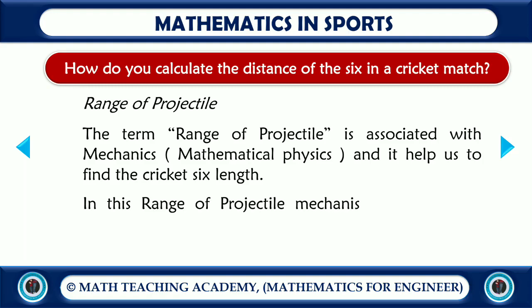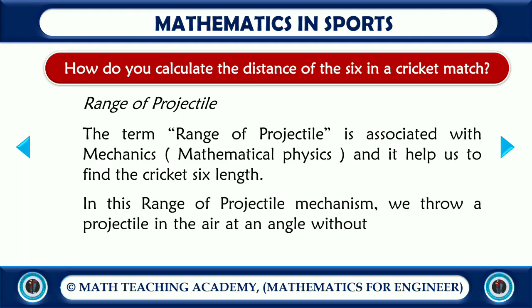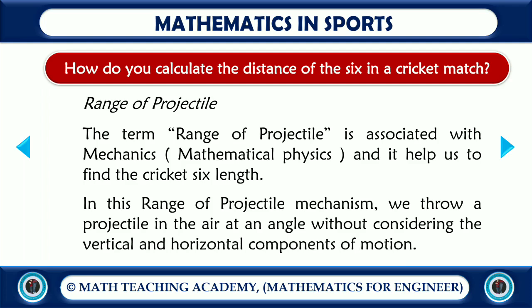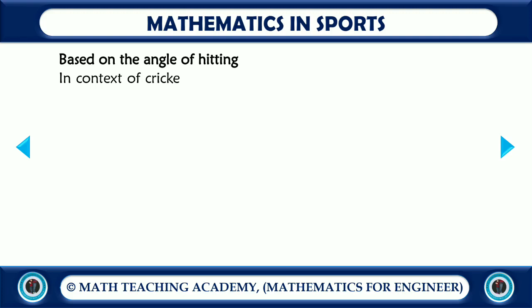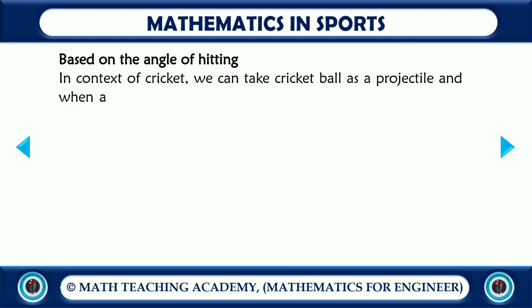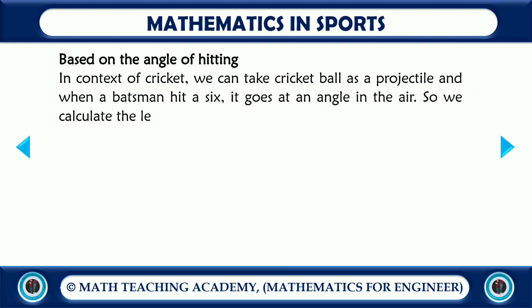In the range of projectile mechanism, we throw a projectile in the air at an angle without considering the vertical and horizontal components of motion separately. In the context of cricket, we can take the cricket ball as a projectile. When a batsman hits a six, it goes at an angle in the air, so we calculate the length of the six based on the angle of hitting.